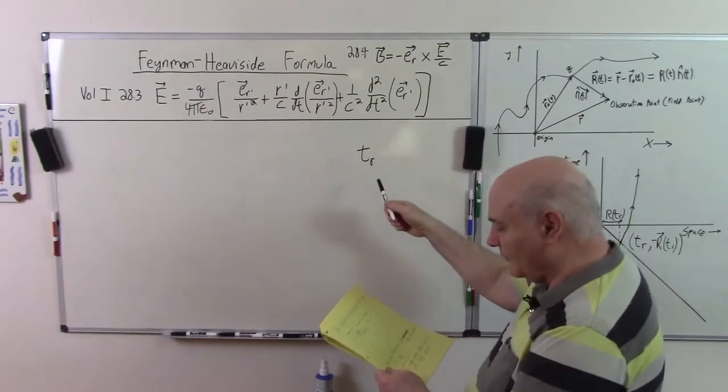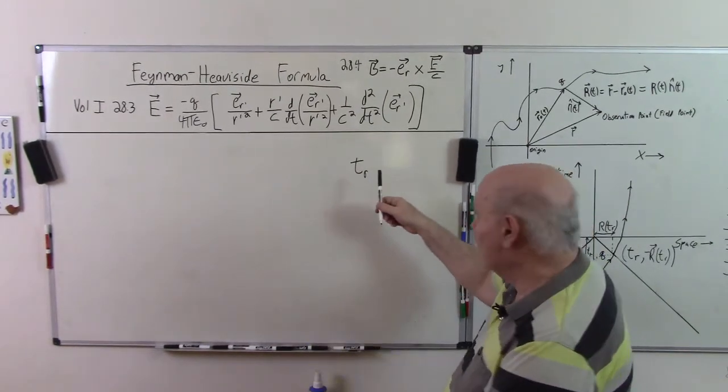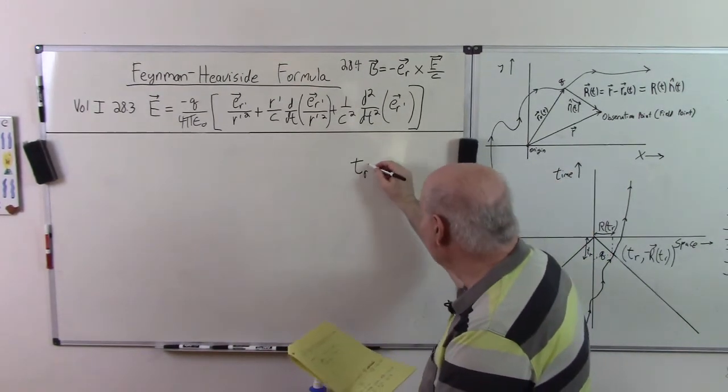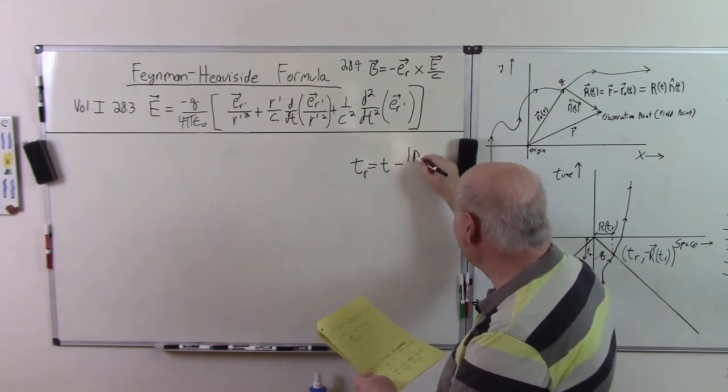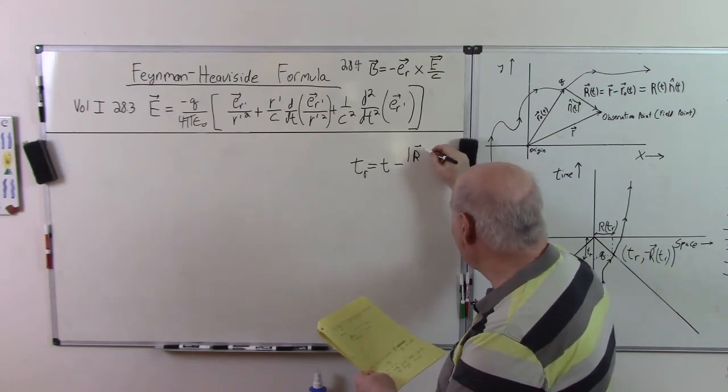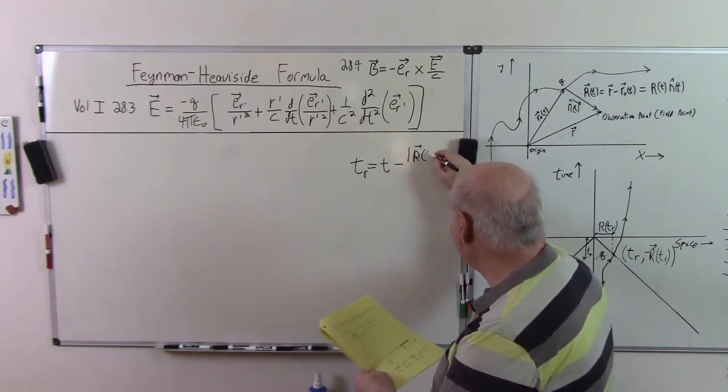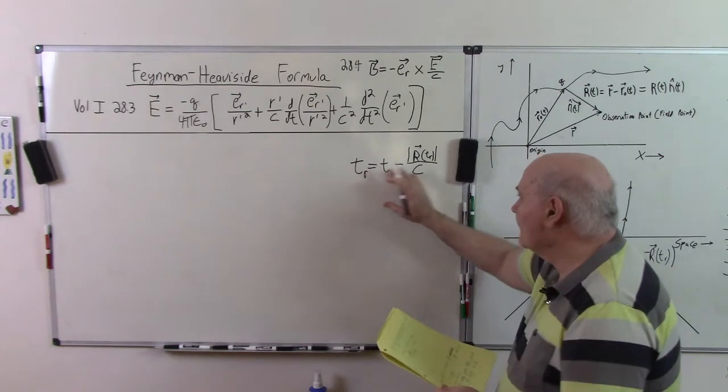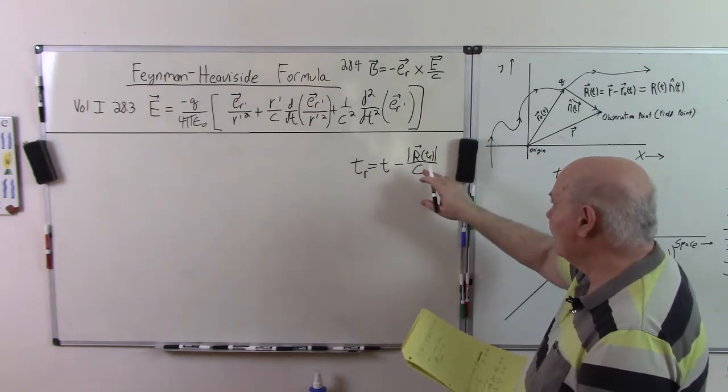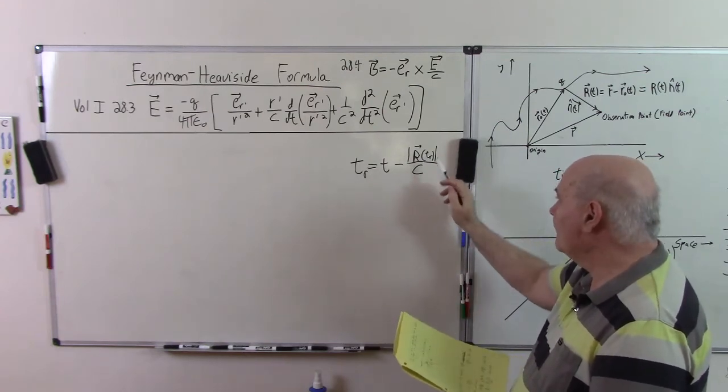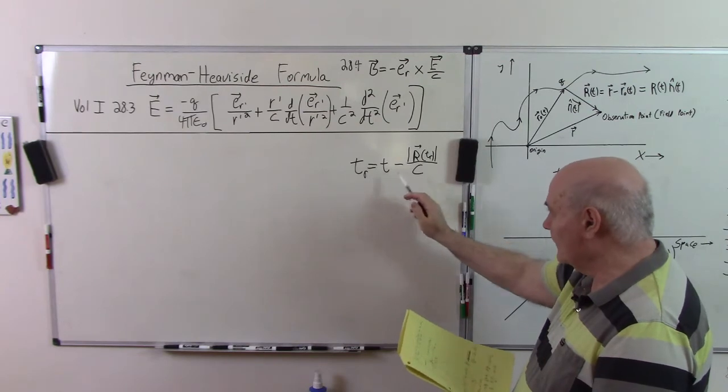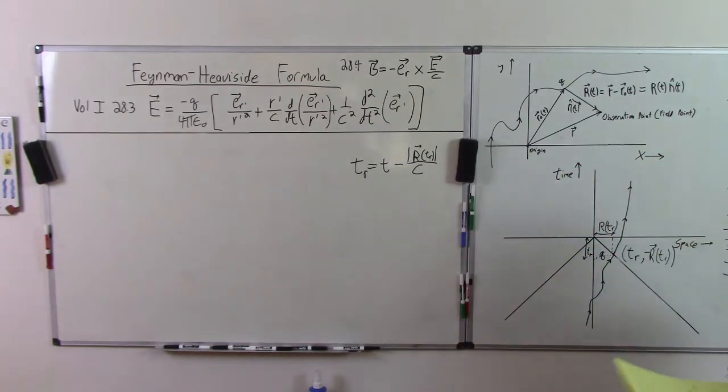So the formula that you have to have for the retarded time is given T_R. I'm going to use a subscript R for all variables that are evaluated at the retarded time. T_R is equal to T minus the magnitude of R at T_R divided by C. So you can see it's like an implicit equation here. We need to find the value of T_R such that the distance divided by the speed of light added to T_R will equal the current time. And there's only one solution and another way to think about the retarded time.